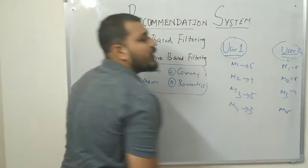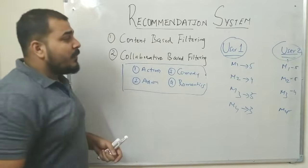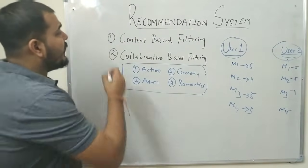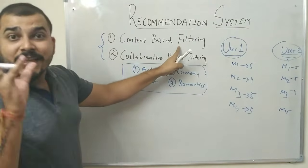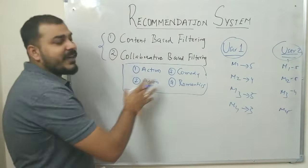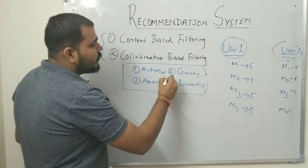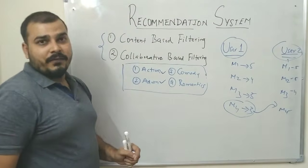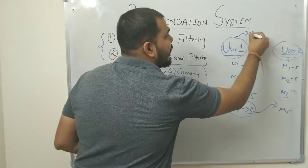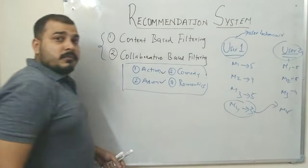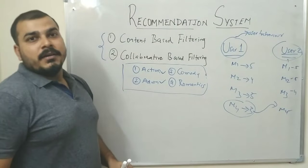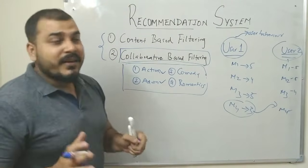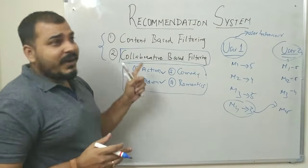Based on this behavior, M4 can be recommended to User 2. The key difference is: content-based filtering recommends based on the categories or content of the movies themselves, while collaborative filtering recommends based on user behavior. Netflix and Amazon Prime make great use of collaborative filtering, while e-commerce sites like Amazon use content-based filtering for product recommendations.